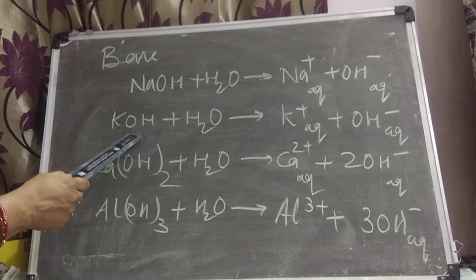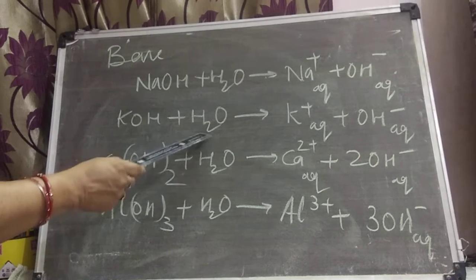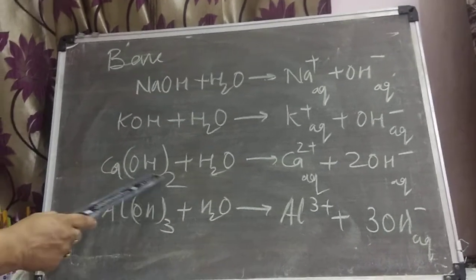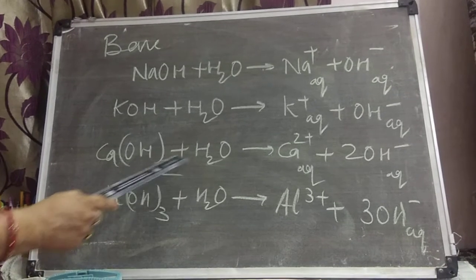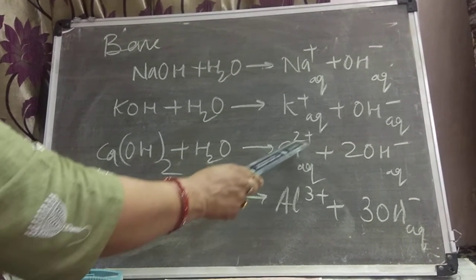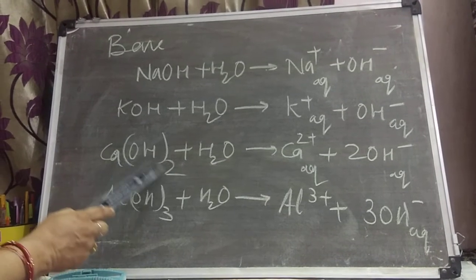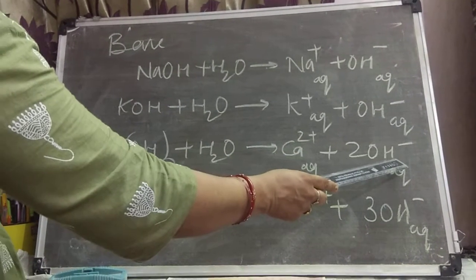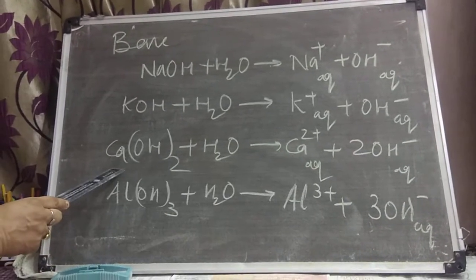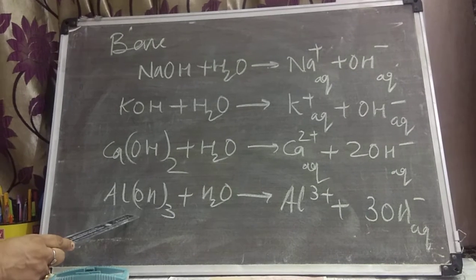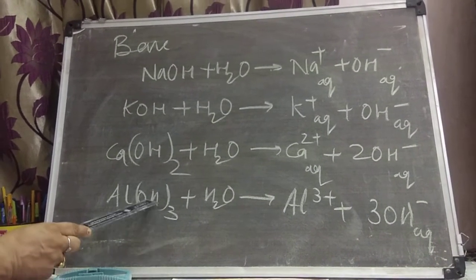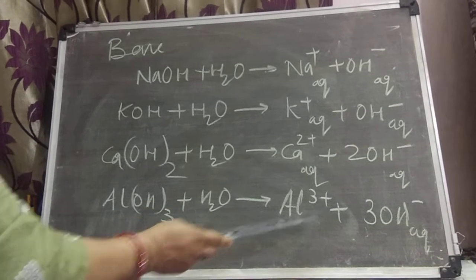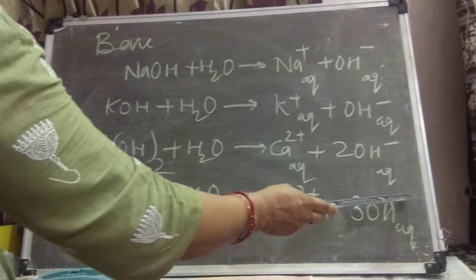Similarly, KOH potassium hydroxide mixed with water gives K⁺ and OH⁻ hydroxyl ion. Calcium hydroxide Ca(OH)₂ added in water will also break into ions: Ca²⁺ and 2 OH⁻ hydroxyl ions. Since OH⁻ we are getting, Ca(OH)₂ is considered as base. Aluminium hydroxide Al(OH)₃ — there are 3 OH groups — on dissolution in water splits into Al³⁺ and 3 OH⁻.